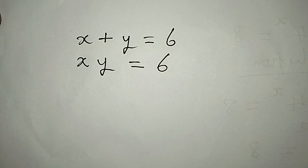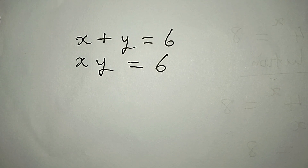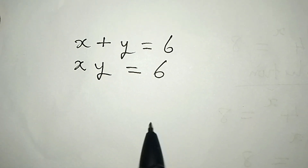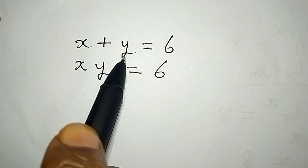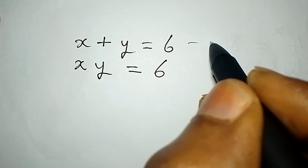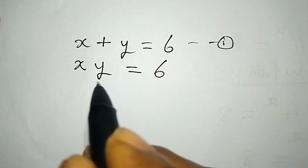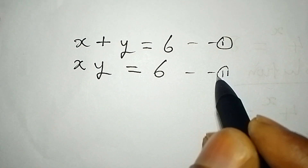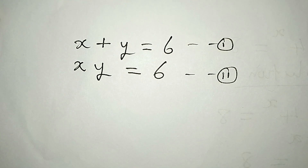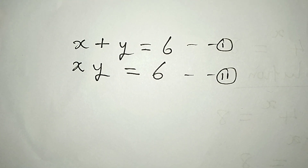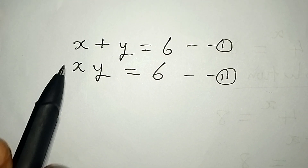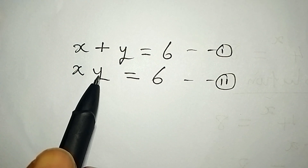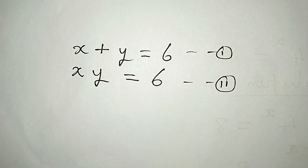Hello everyone. Let's provide the solution to this problem. x plus y equals 6 — we'll call this equation 1. x times y also equals 6 — equation 2. Now the question is: can it ever be possible that x plus y equals 6 and x times y equals 6?